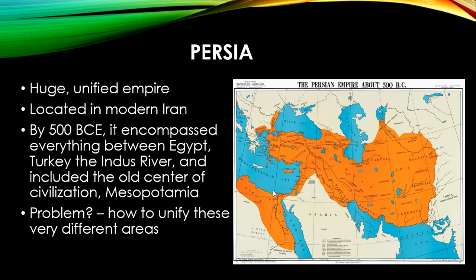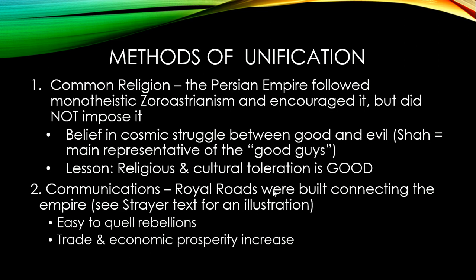Every classical period empire faces the same problem: how do I unify, rule, and centralize control over this huge expanse of land? Persia is going to use many different methods of unification. Note that many of these methods are common to all of the empires — Persia is not the only one struggling with how to keep their empire together. These big ideas about how to unify are going to be used by pretty much everybody.